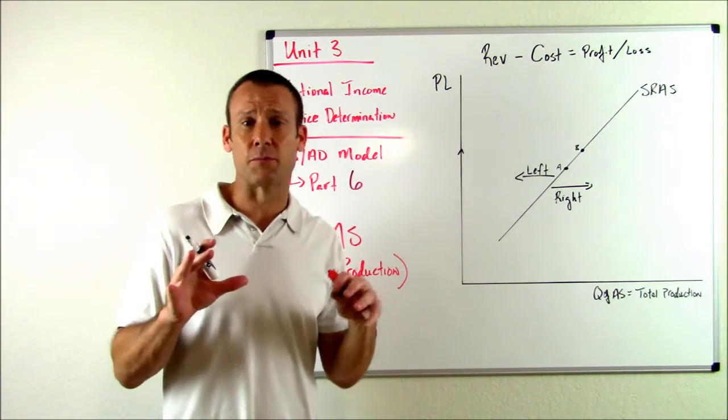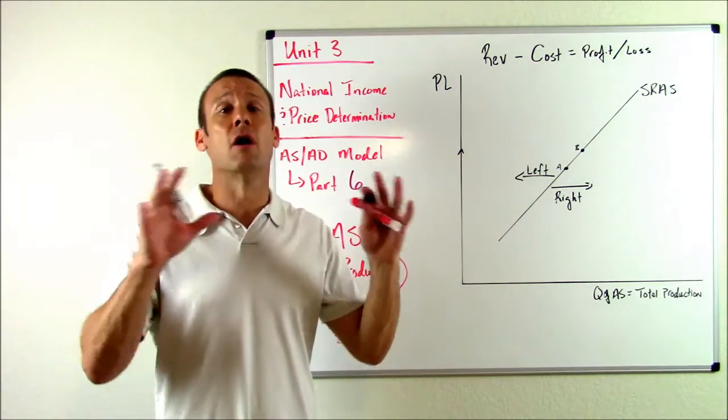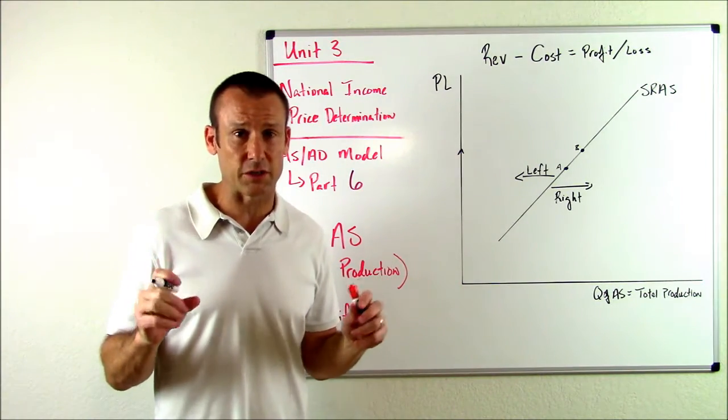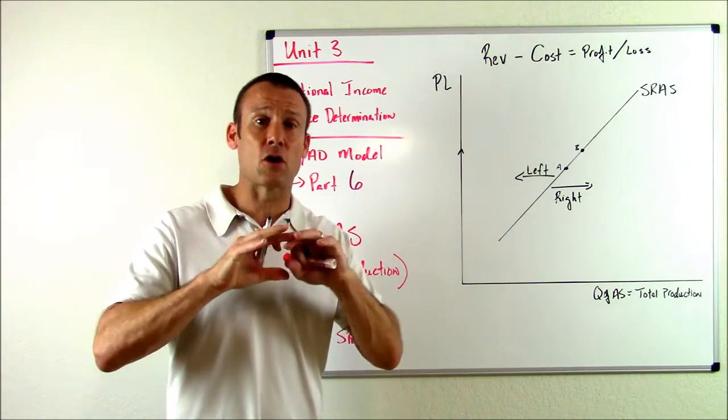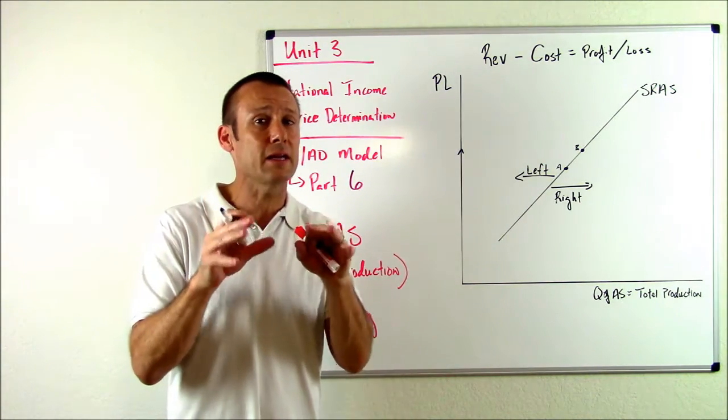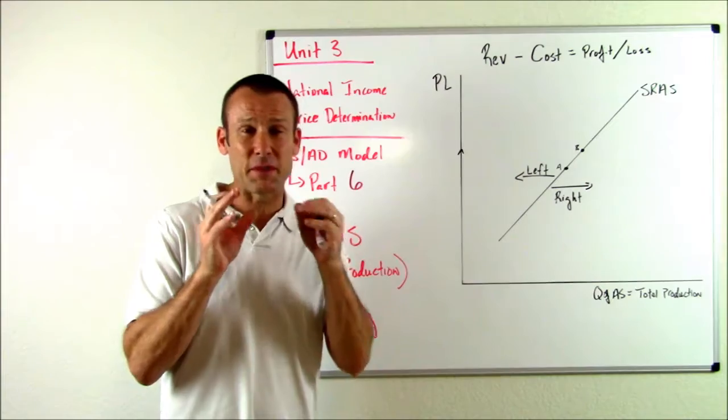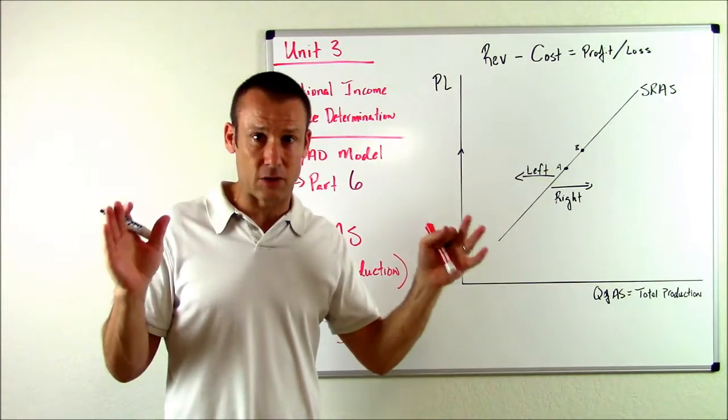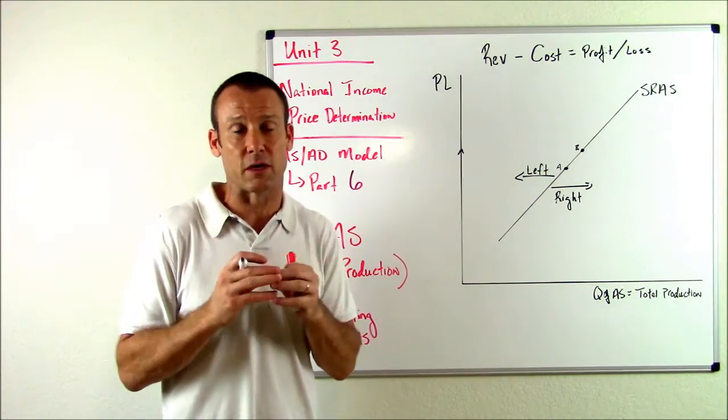Now, I want you to understand something. There's actually a ton of things that change the cost of production, but what we're going to focus on are things that are ubiquitous enough in our economy, i.e. things in our economy that affect almost every single producer in our economy. That's what we're going to be focused on.